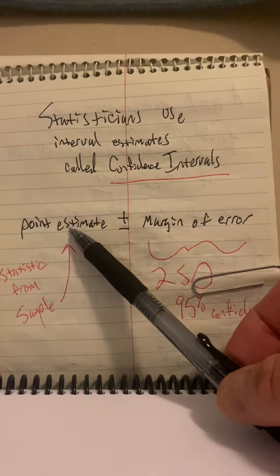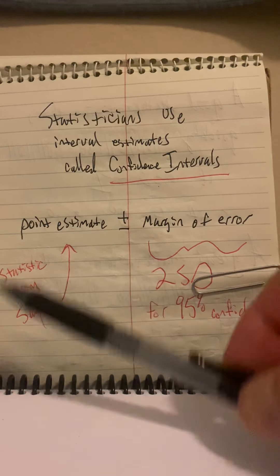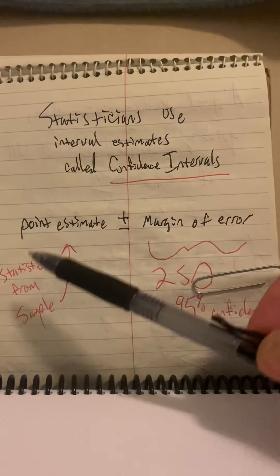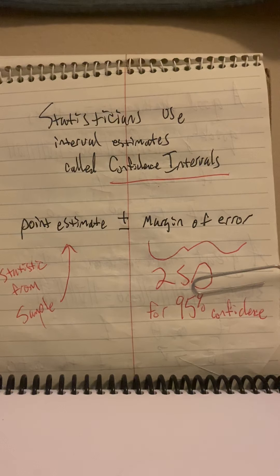The way you get the point estimate is your statistic from the sample. So you gather up a sample. And if you're estimating a mean, then you get the sample mean, and that's your point estimate. Now, how do you get the margin of error?